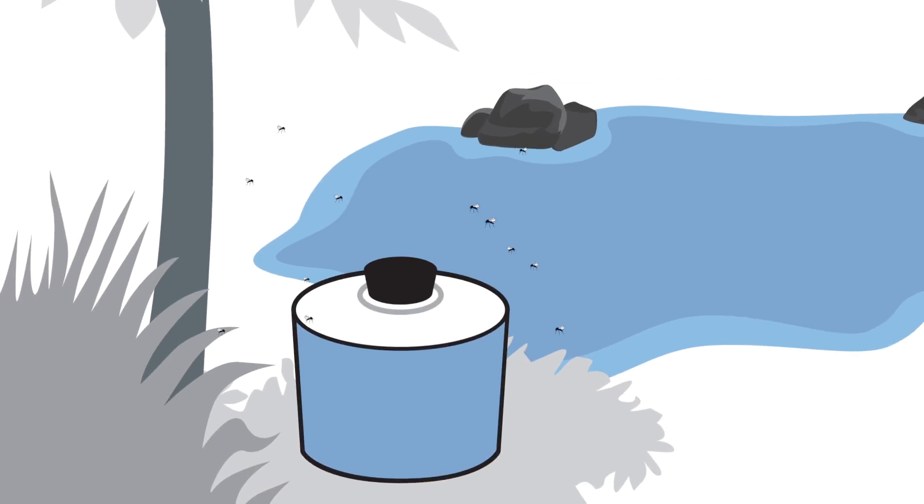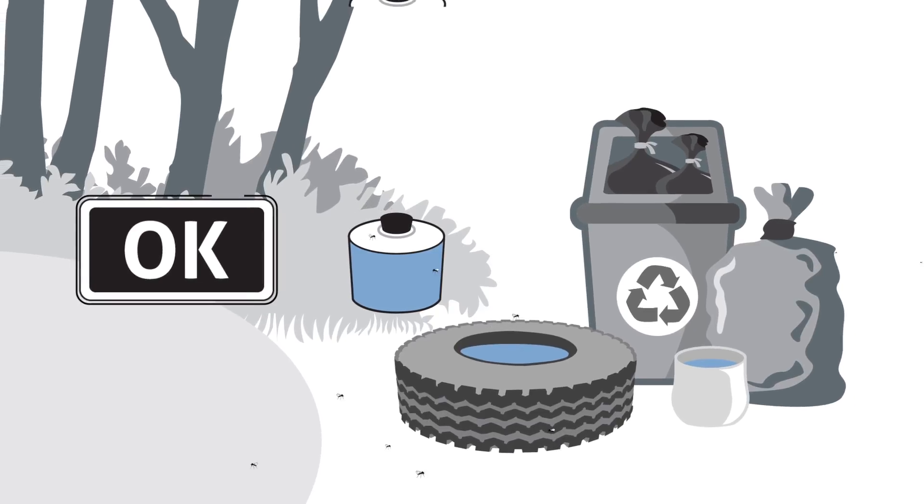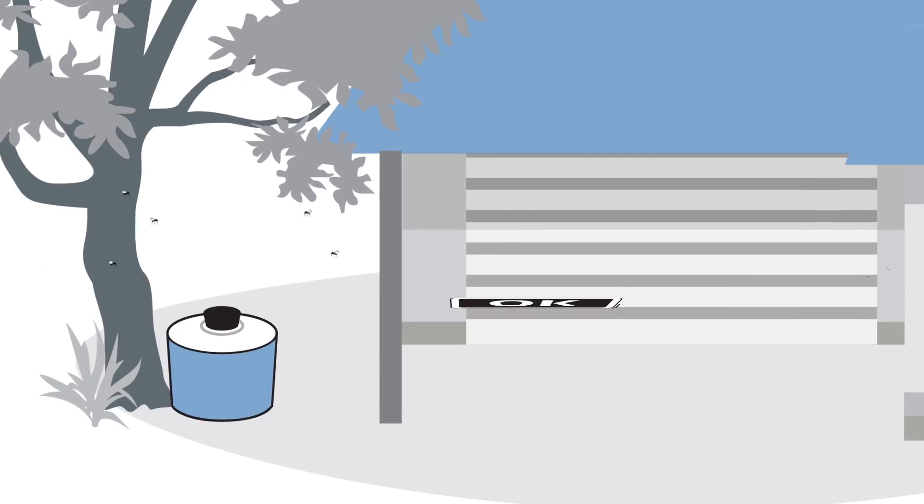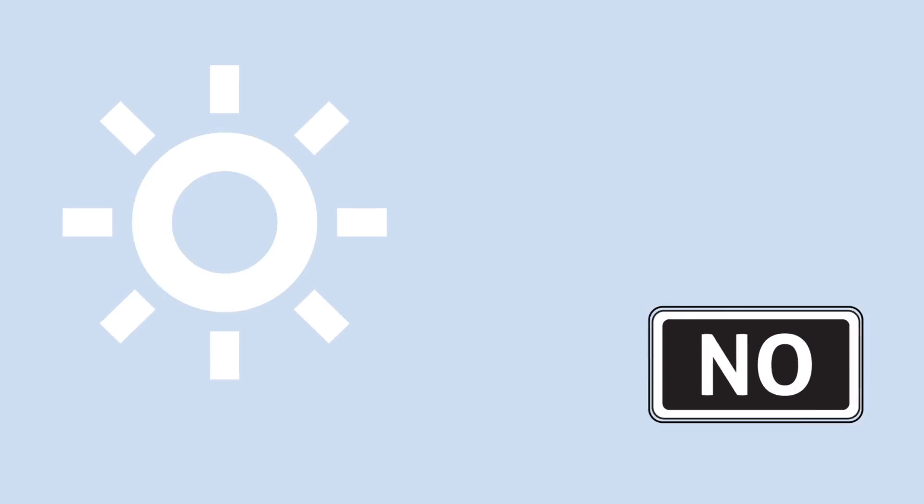Place traps near mosquito resting and breeding areas. In this way the trap will catch the mosquitoes before they reach you. You can also put them near your patio, balcony, or entrance areas. Avoid covering traps or exposing them to sun and wind.